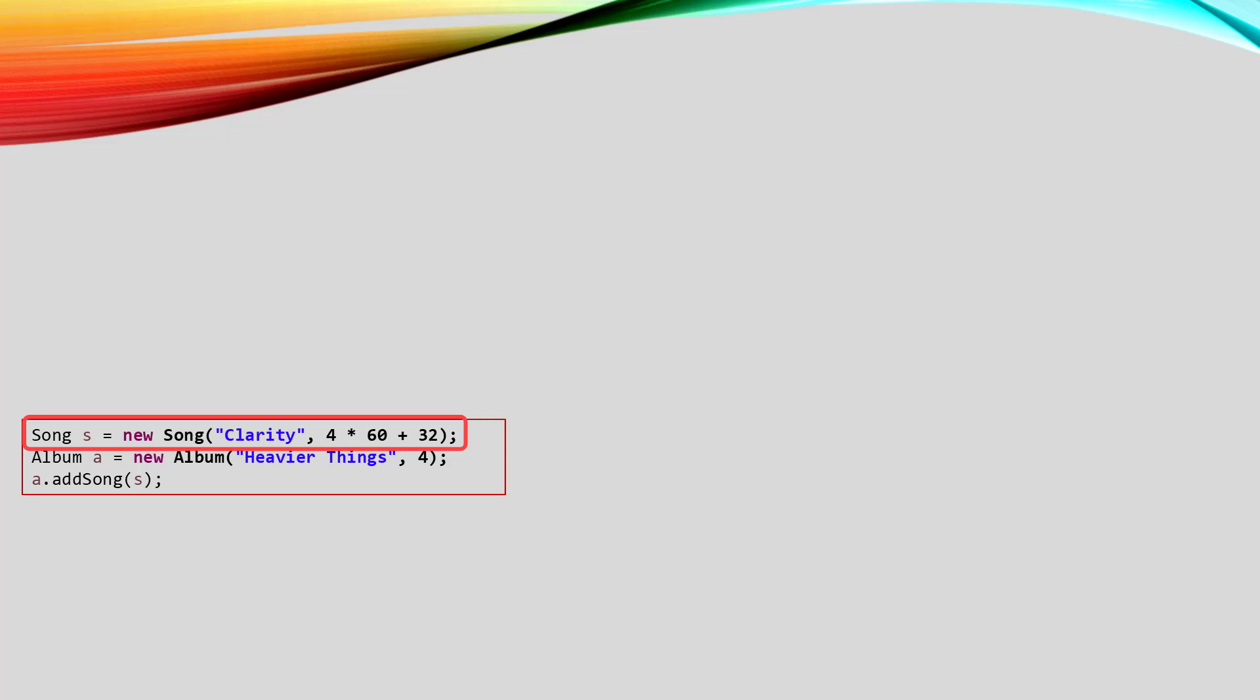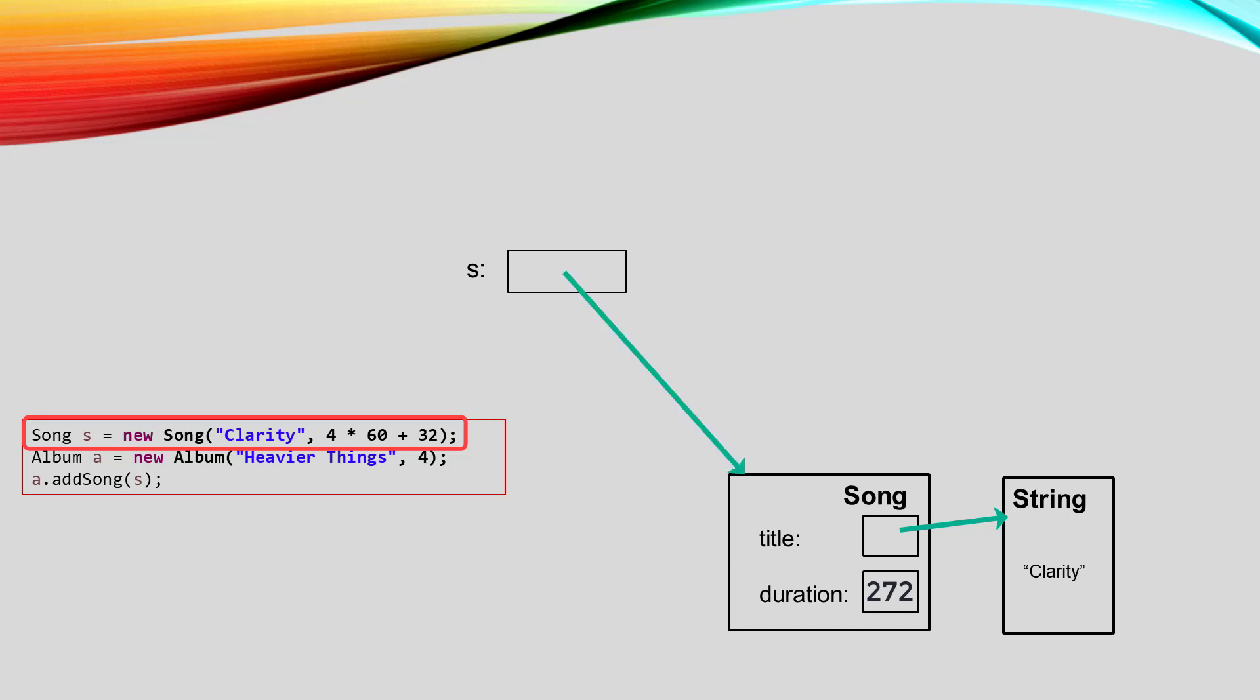In a memory diagram, that statement looks like this. The declaration of the variable s allocates enough space for a reference. The new statement calls the constructor, which will store the parameters into the instance variables. The constructor returns the pointer to the new object and the assignment statement stores that pointer into the variable s.